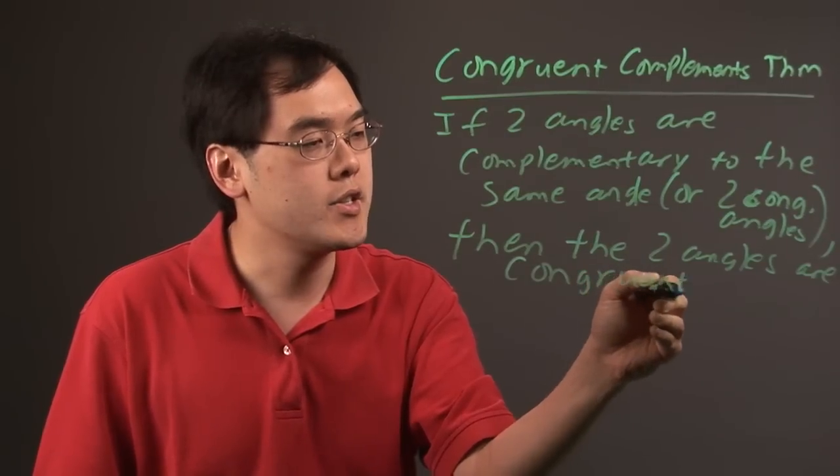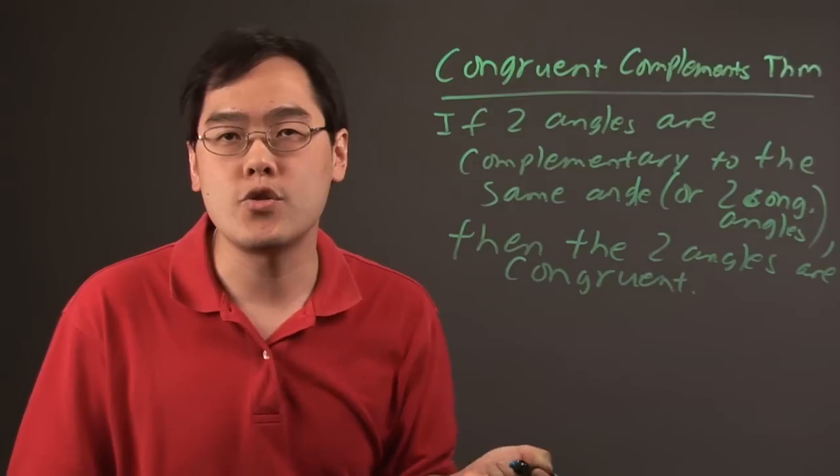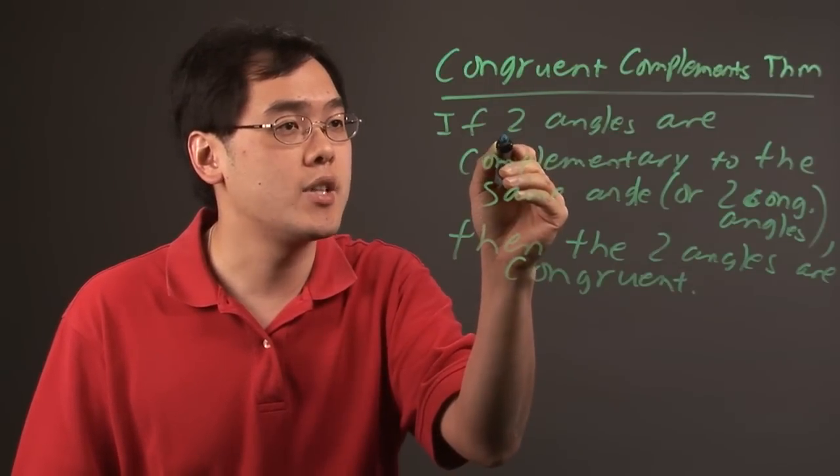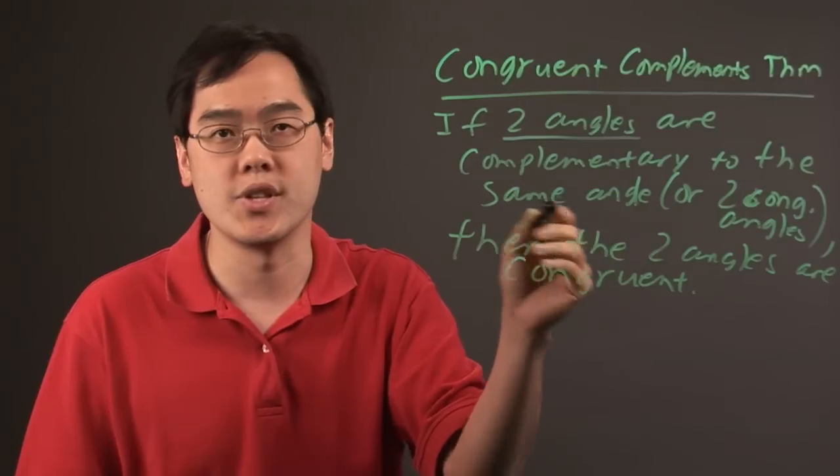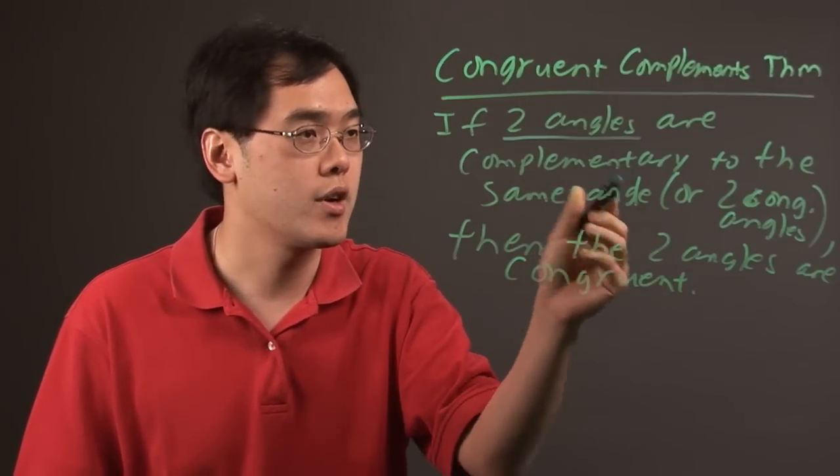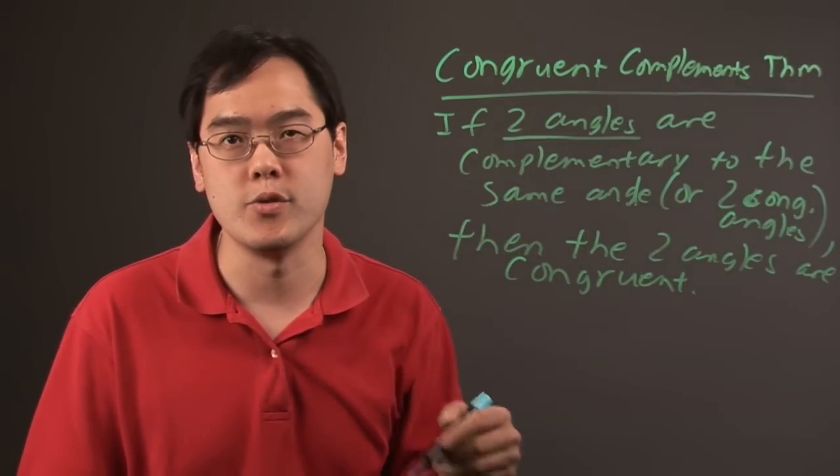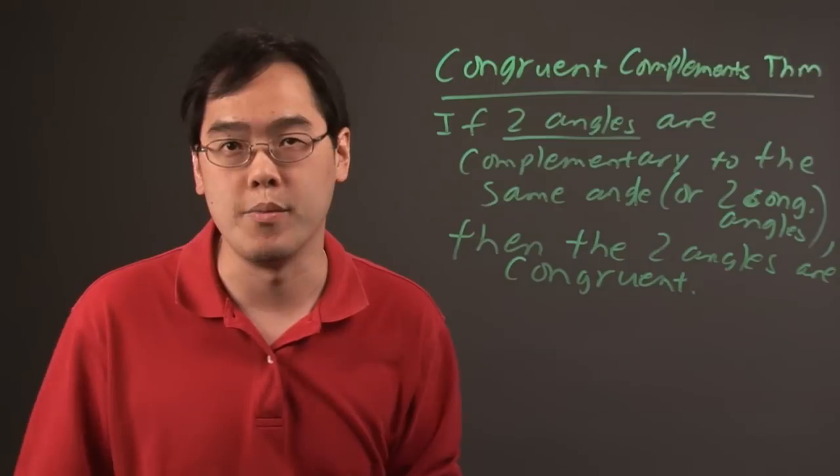Now the idea here is, just as a friendly reminder, complementary angles are angles that add to give you 90 degrees. So the idea here is that if two angles are complementary to the same given angle, or if they're complementary to two angles that are the same, then the two original angles are going to be congruent or have the equal measure.